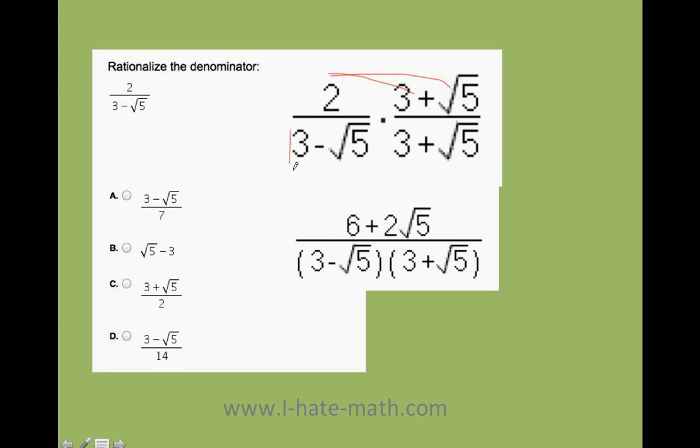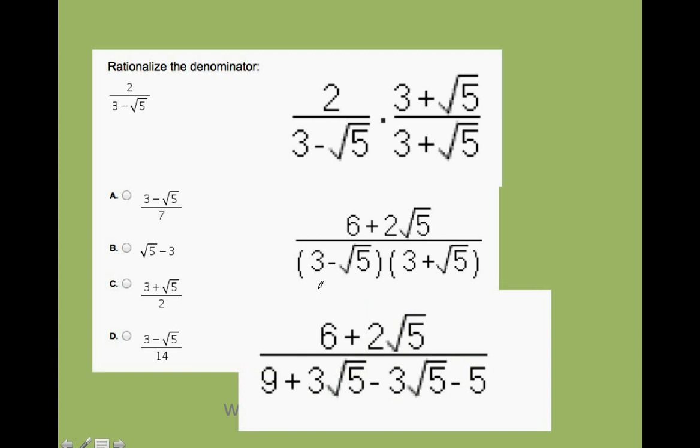Now let's do the bottom. This is the same as just FOILing. So we're going to do it. I go 3 times 3, which is 9. 3 times the square root of 5, 3 square root of 5. Negative square root of 5 times 3 is negative 3 square root of 5.